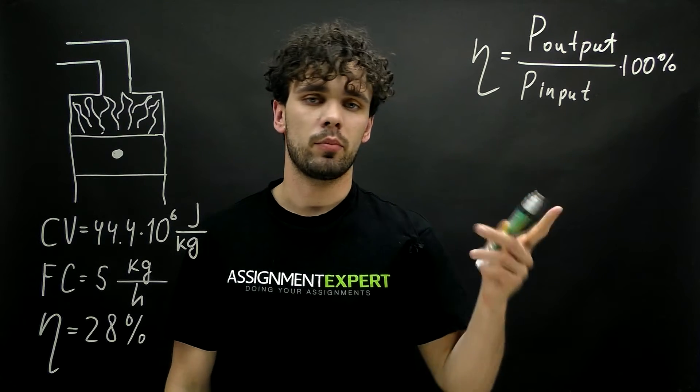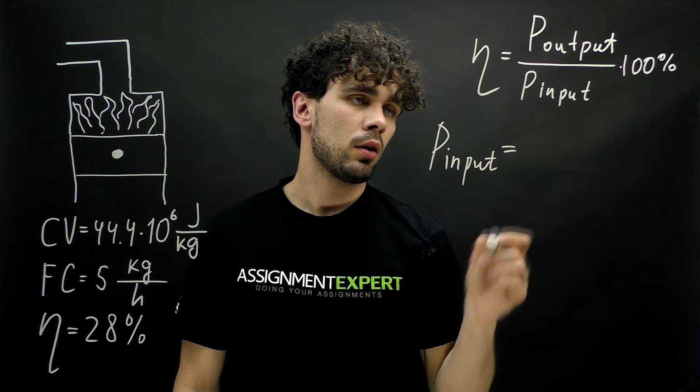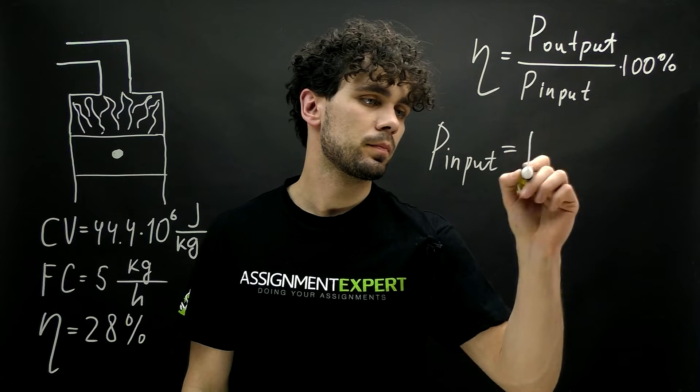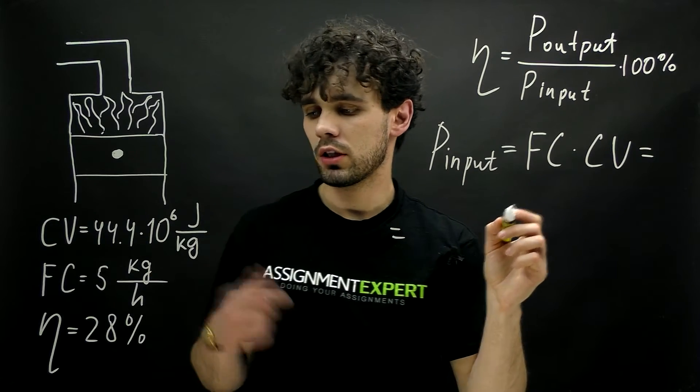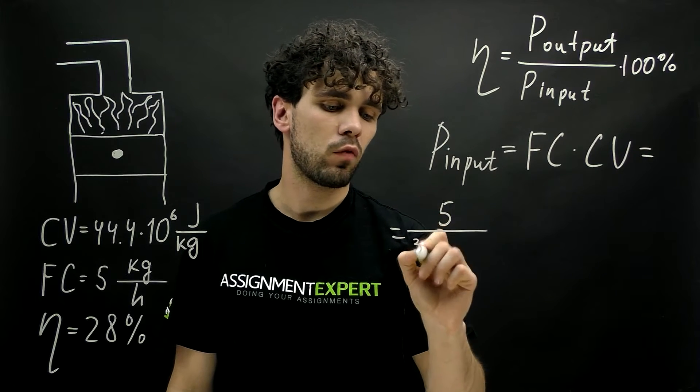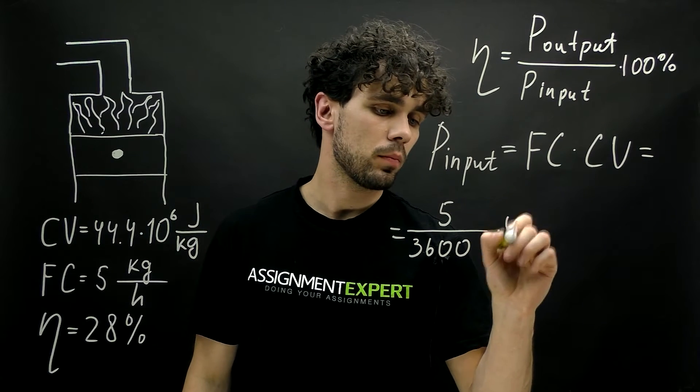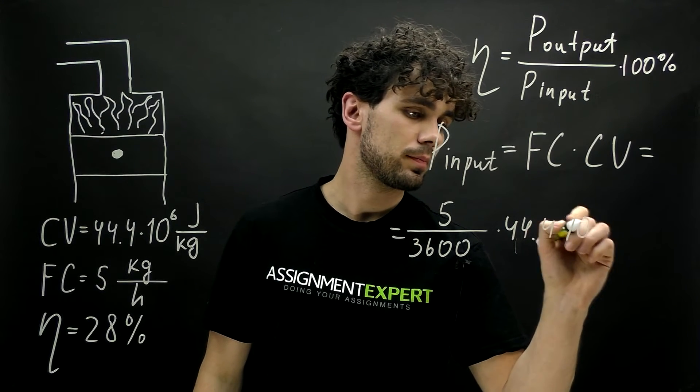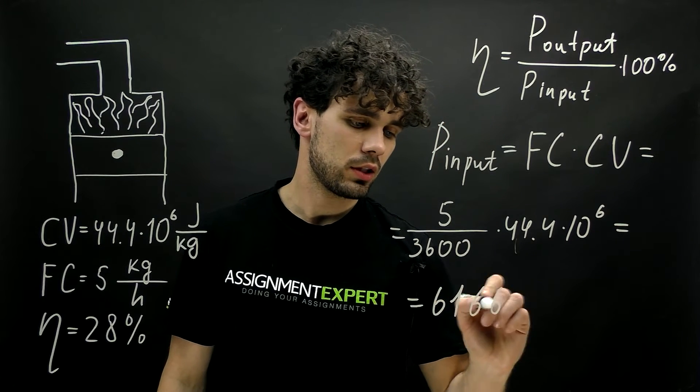So, let's start with the power input. This is simply found by multiplying the fuel consumption by the calorific value of the fuel. And in our case the fuel consumption is 5 kilos per hour or in kilos per second, it is 5 over 3600. And the calorific value is 44.4 times 10 raised to the sixth power. And this gives us 61,667 watts.